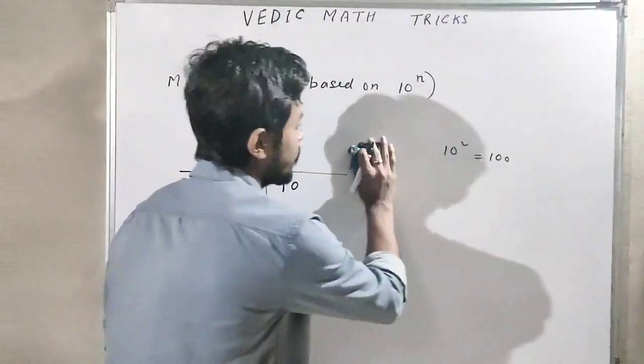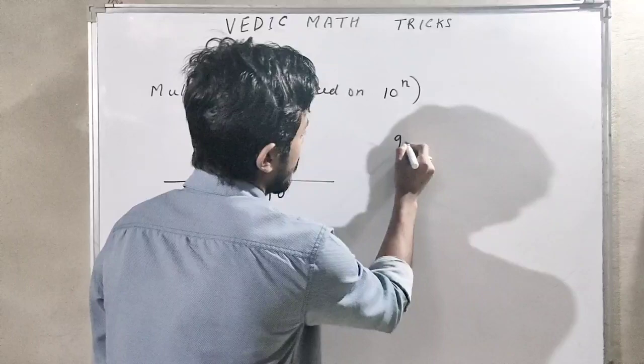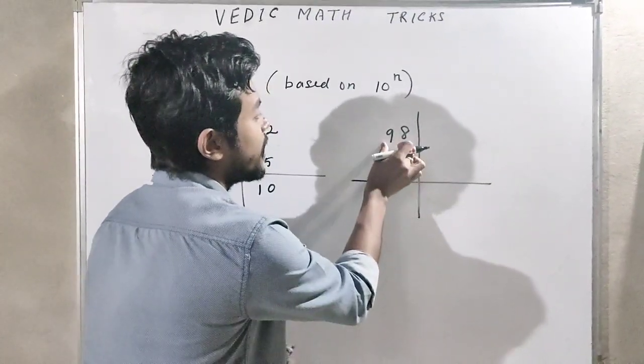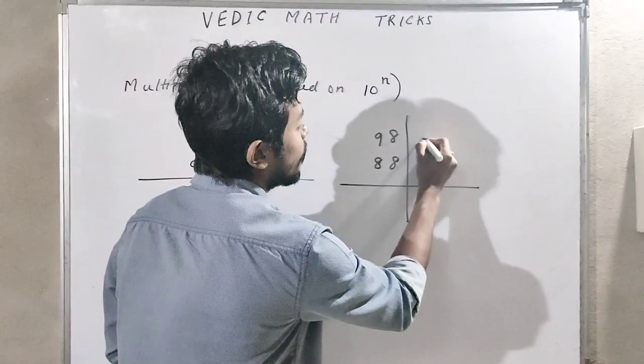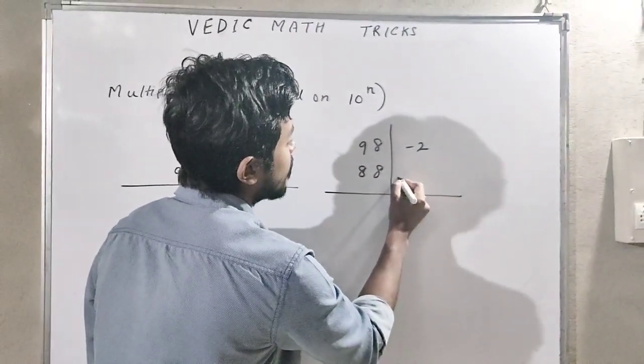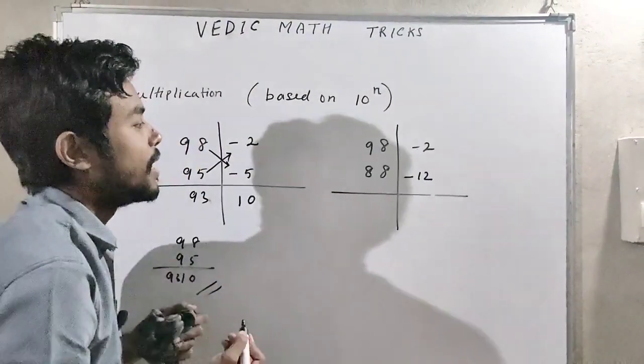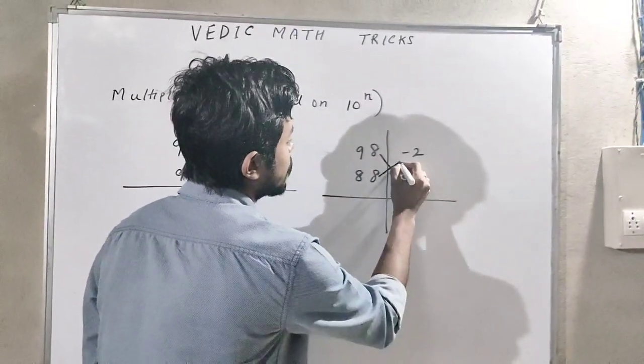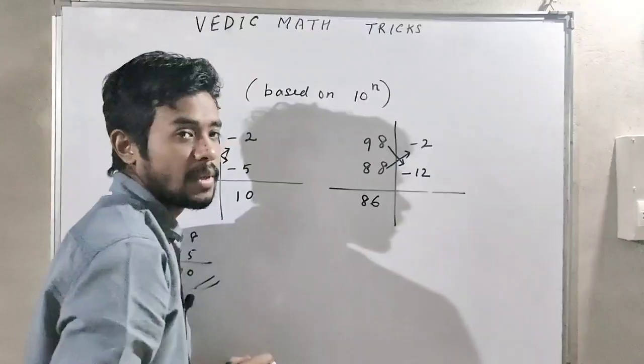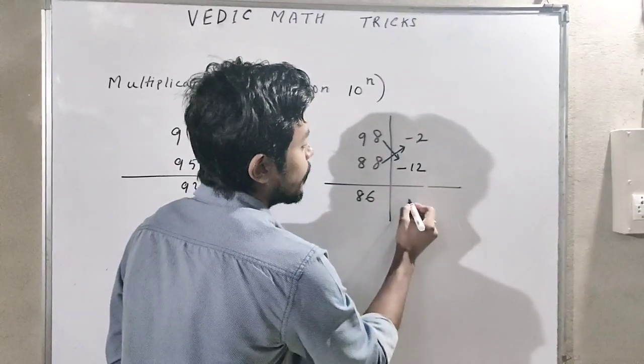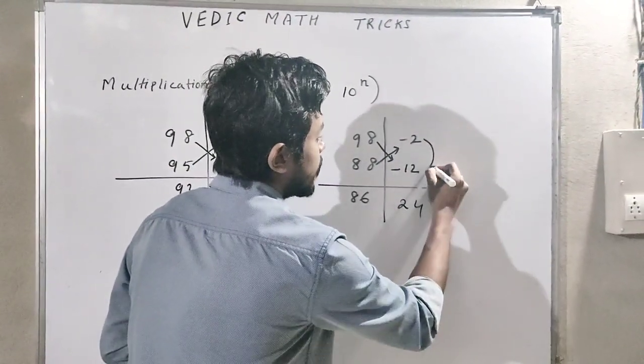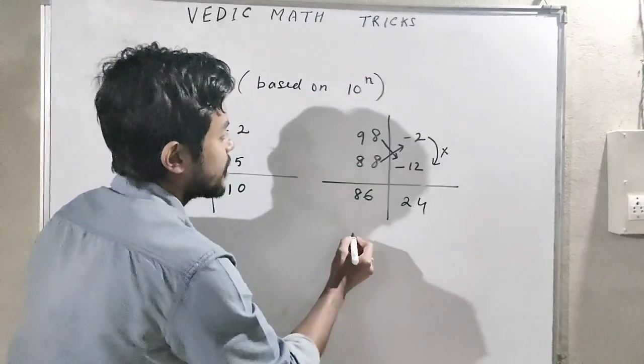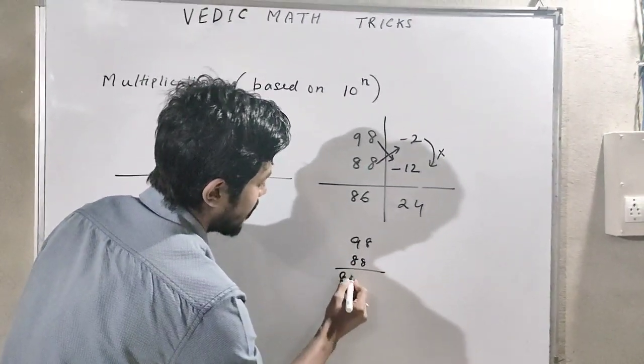Let us take another example: 98 by 88. Now 98 is how much less than 100? Minus 2. And 88 is how much less than 100? Minus 12. Now 98 minus 12 or 88 minus 2, what will you get? 86. Now 12 into 2, what will you get? 24.